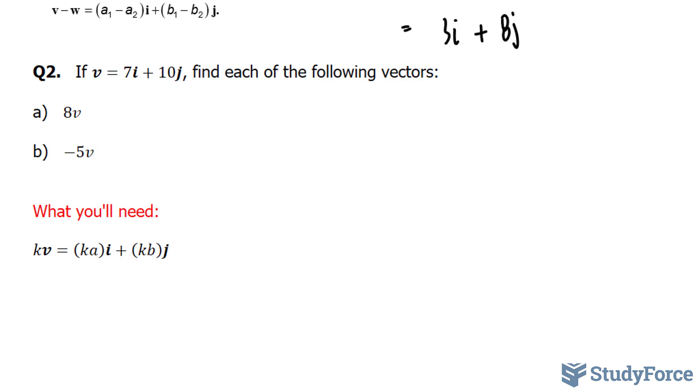8 times v, and for b, negative 5 times v. To do this, we'll need to follow the following pattern.